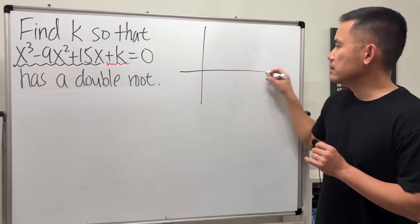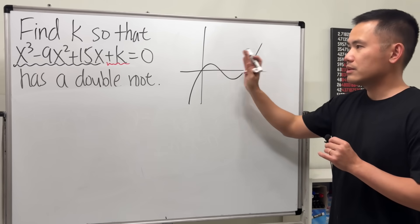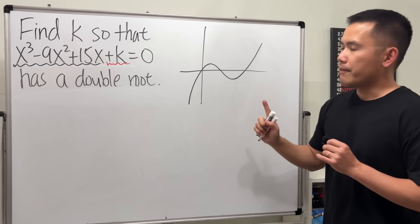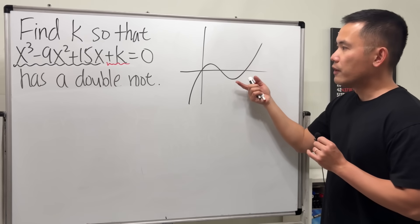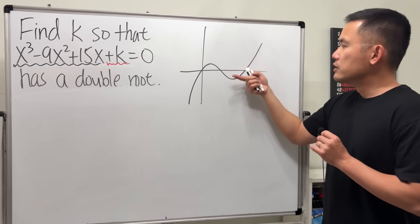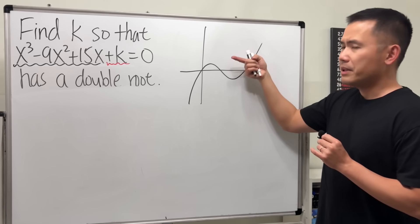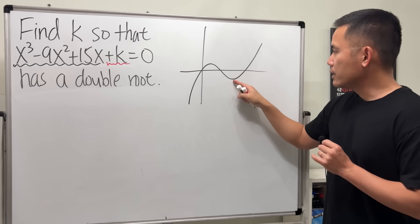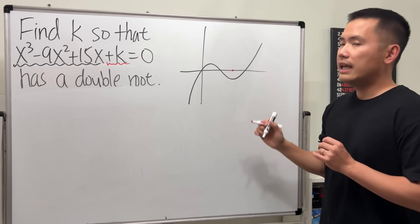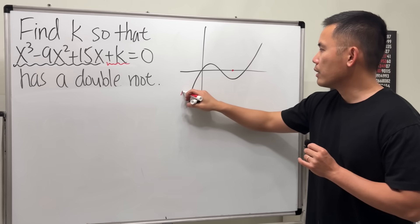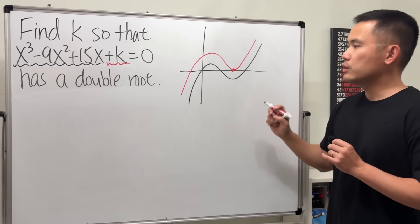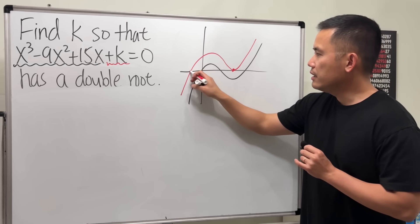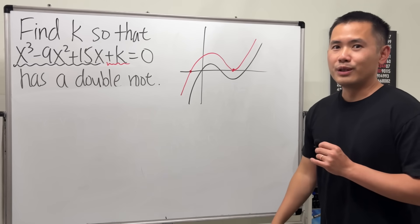When you graph a cubic function, let's say the graph looks like this—just a random graph. Now if k is positive, then that will be a vertical shift of the graph. So I want to just bring it up enough times so I want this to be touching at the x-axis and the graph will look like this.